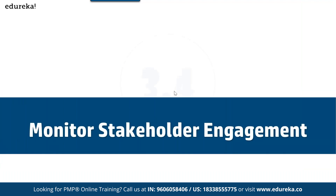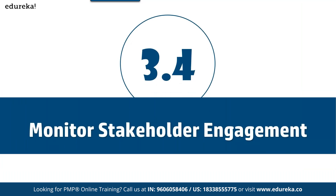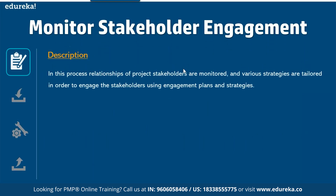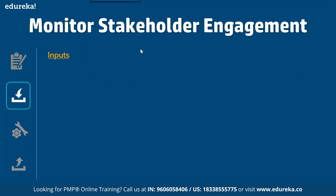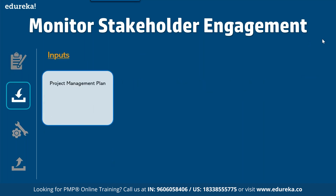The fourth and last process is monitor stakeholder engagement. This is a process where relationships with project stakeholders are monitored and various strategies are used to engage stakeholders using the engagement plan. This process is performed throughout the project life cycle, which helps in maintaining and increasing the efficiency and effectiveness of stakeholder engagement. It is also crucial to perform as the project evolves.